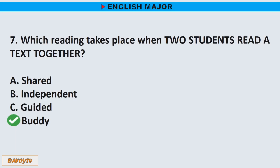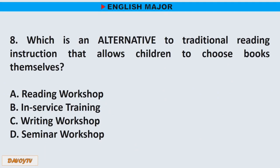Question number 8. Which is an alternative to traditional reading instruction that allows children to choose books themselves? A. Reading workshop. B. In-service training. C. Writing workshop. D. Seminar workshop. The correct answer is letter A. Reading workshop.